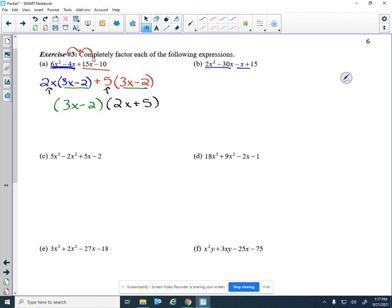So, four-term polynomial we group. GCF is 2x. Here's that weird situation where that second pair is opposite of what I want. So when it's opposite of what I want, I take out a negative 1, and I have x minus 15. So taking the common binomial factor is x minus 15, and then we have 2x minus 1.